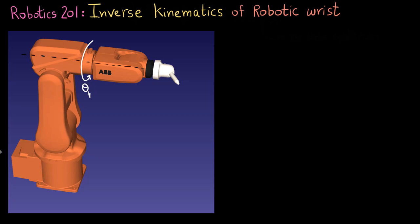So there is this theta 4 and then there is another rotation which can take place about this axis which I have called theta 5. And then there is another axis of rotation theta 6.